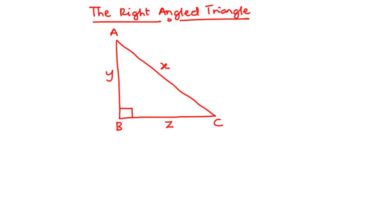Today we are going to solve some questions on the right-angled triangle. A right-angled triangle is a triangle in which one of its angles is 90 degrees. Let's consider triangle ABC, where side AC is x, AB is y, BC is z, and angle ABC is 90 degrees — that is the right angle.